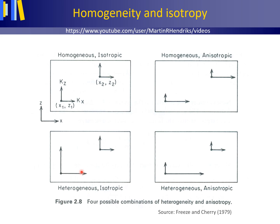This gives us four cases: a homogeneous isotropic aquifer, a homogeneous anisotropic aquifer, a heterogeneous isotropic aquifer, and a heterogeneous anisotropic aquifer.